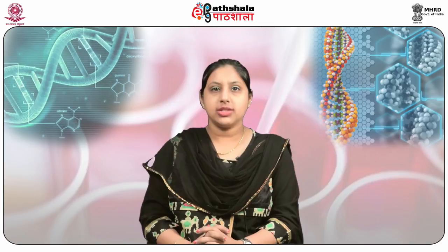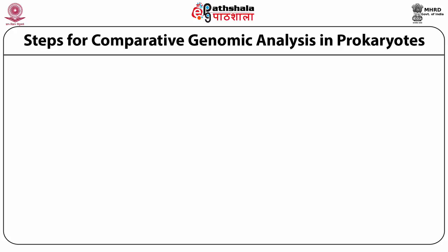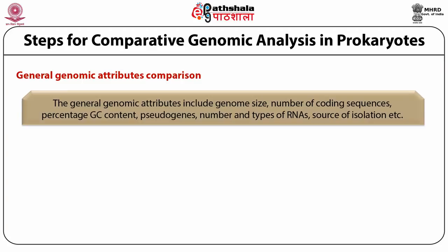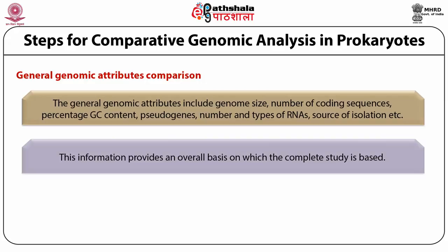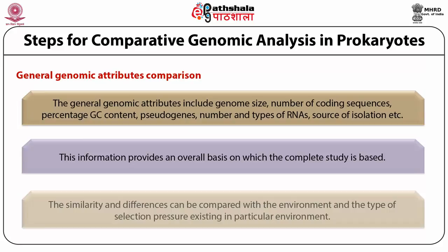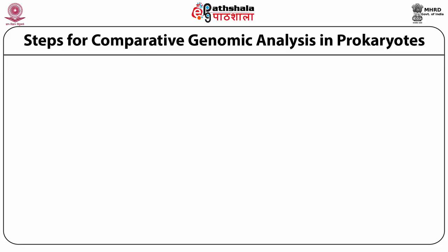Steps for comparative genomic analysis in prokaryotes involve three major steps: determination or comparison of general genomic attributes, phylogenetic analysis, and functional genomics. The first step involves general genomic attribute comparison, where attributes including genome size, number of coding sequences, percentage GC content, pseudogenes, number and types of RNAs, and source of isolation are compared between different prokaryotic genomes. This information provides an overall basis for the complete study, and similarities and differences can be compared with the environment and selection pressure existing in that particular environment.